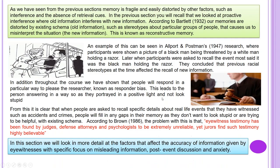As we have seen from previous sections, memory is fragile and easily distorted by other factors, such as interference and absence of retrieval cues. In the previous section we looked at proactive interference, where old information interferes with new information. According to Bartlett (1932), our memories are distorted by existing schemas — old information, such as stereotypes about particular groups of people — that cause us to misinterpret new information. This is known as reconstructive memory.